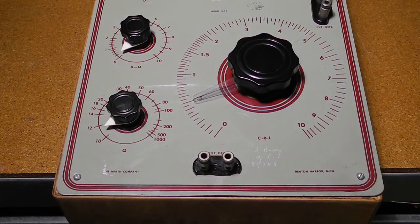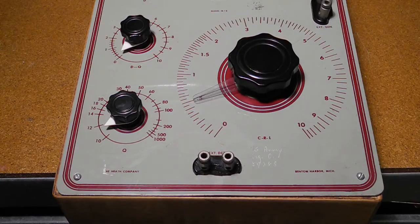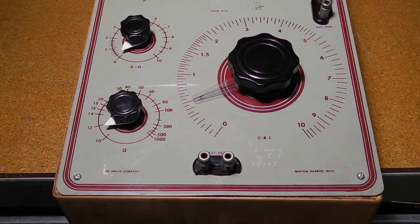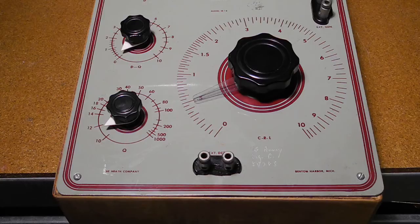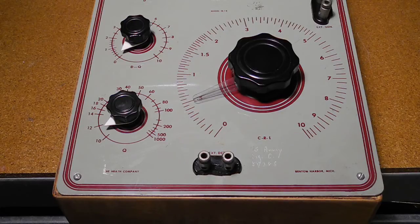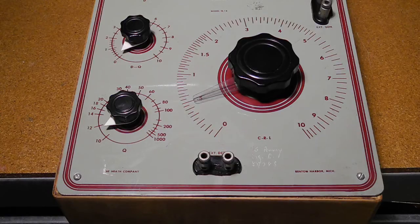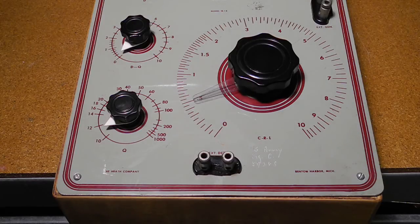It can measure resistance from 10 milliohms to 10 megaohms, capacitance from 10 picofarads to 100 microfarads, and inductance from 10 microhenries to 100 henries. Eight ranges are provided. It also measures Q of inductors from 1 to 1000, and dissipation factor of capacitors from 0.002 to 1. Accuracy is about plus or minus 3% for resistance and capacitance, and plus or minus 10% for inductance.